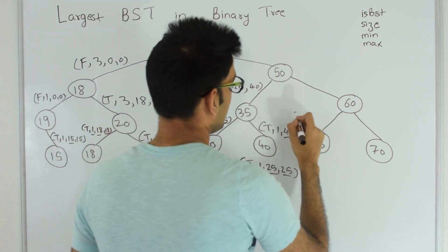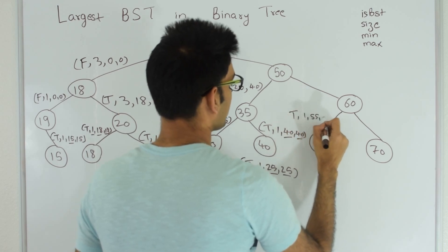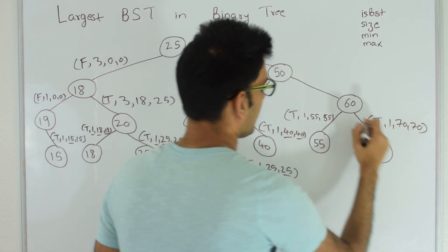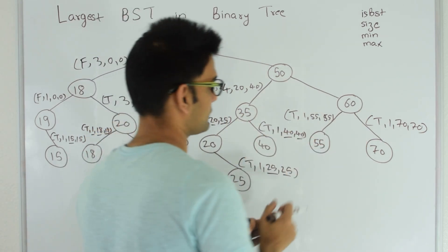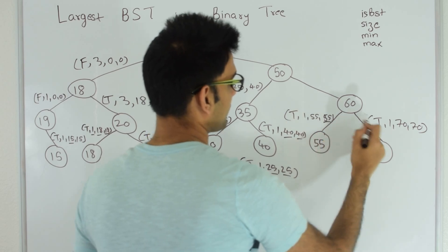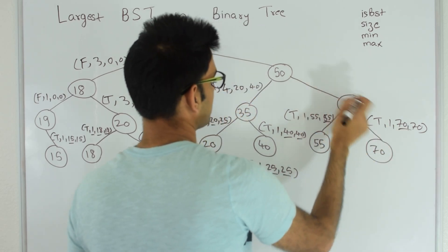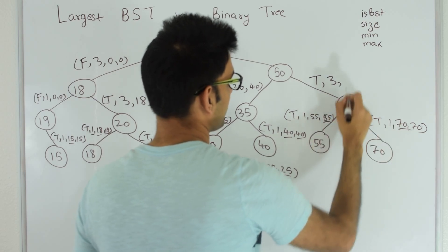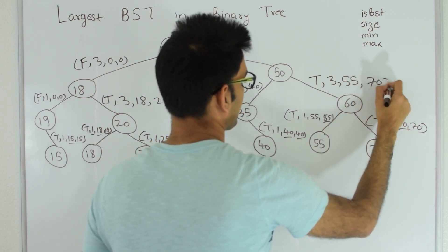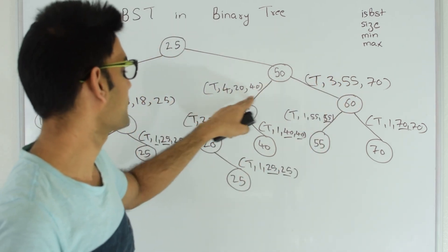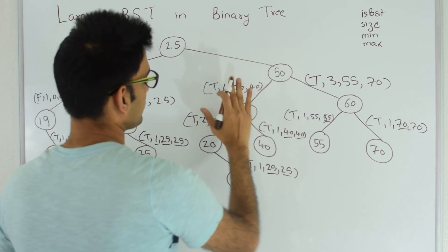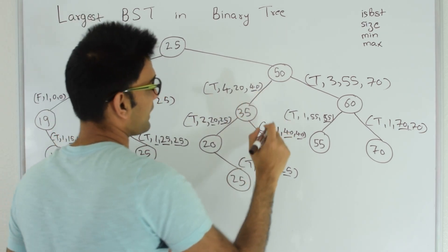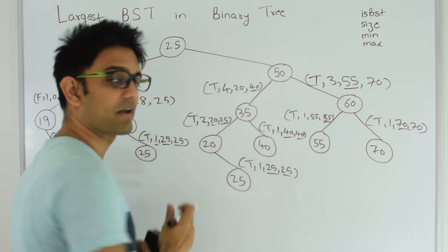Node 50 goes to 60, 60 goes to 55. Node 55 returns true, 1, 55, 55, and node 70 returns true, 1, 70, 70. Node 60 similarly verifies that its left and right subtrees are BSTs, and that 60 is greater than the max of left and less than the min of right, so it continues to be a BST. Node 60 returns true, size 3, minimum 55, maximum 70. Node 50 then gets size 4 from the left side and size 3 from the right side. It knows both subtrees are BSTs, and 50 is greater than the max of the left (40) and less than the min of the right (55), so including 50 it is also a BST.